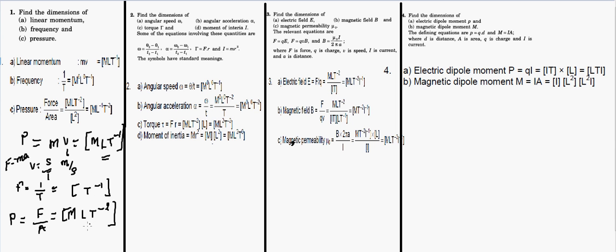For area, the dimension is L². So pressure = MLT⁻² / L² = ML⁻¹T⁻², because 1 minus 2 gives minus 1 for L. Overall, the dimension of pressure is ML⁻¹T⁻².